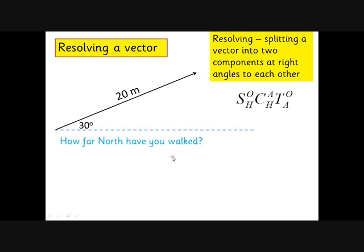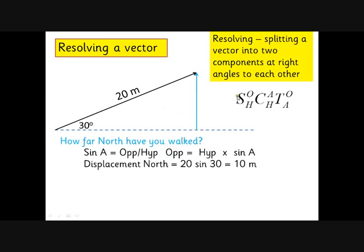How far have I walked to the north, and how far to the east? To get the distance north, we need this length here. This is the opposite of the triangle, so we're looking for sine because we've got hypotenuse and we want opposite. The sine of the angle is the opposite over the hypotenuse. If we rearrange, we get the opposite equals hypotenuse times sine. Hypotenuse is 20, so 20 sine 30 is 10 meters.